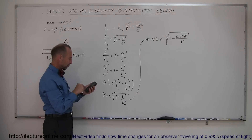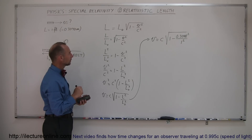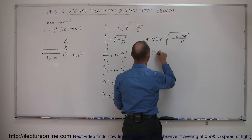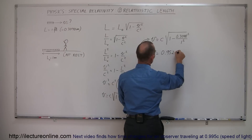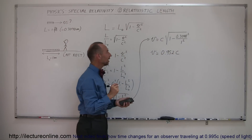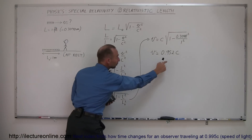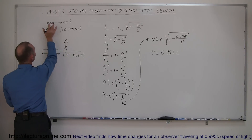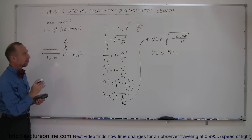We take the square root of that result, and we get v equal to 0.952c, or 95.2% the speed of light. So the answer is: if this meter stick moves at a velocity equal to 95.2% the speed of light, its length will have shrunk to 1 foot as compared to its rest length of 1 meter. That's how you do that problem.